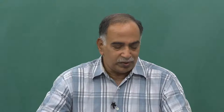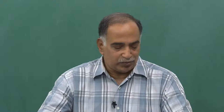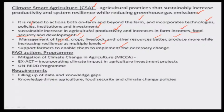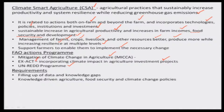This has been in the conception stage or to some extent it has been happening. There are FAO action programs for mitigation of climate change in agriculture incorporating all those areas. There are EXACT agriculture investment projects, small policy changes, investment methodology changes, as well as UN REDD programs which focus on climate smart agriculture — addressing problems in terms of technology, policies, and institutional investments.